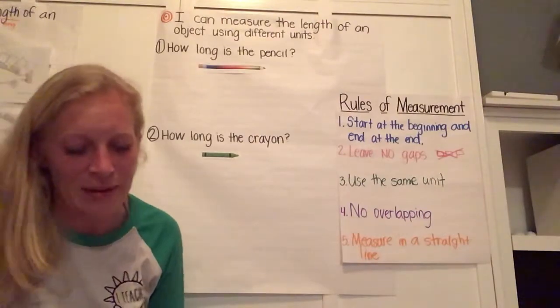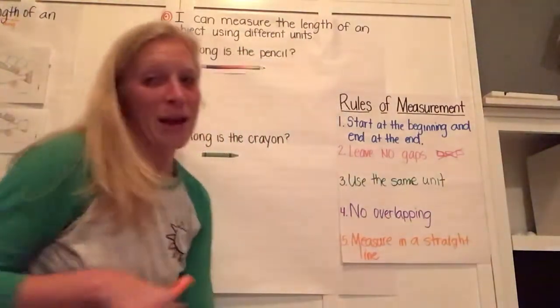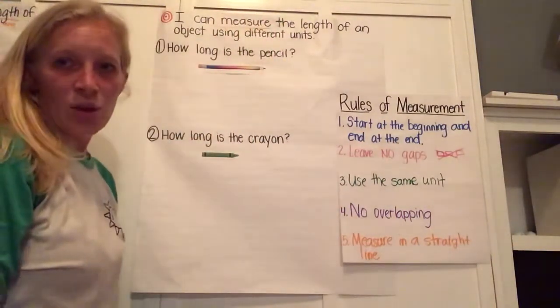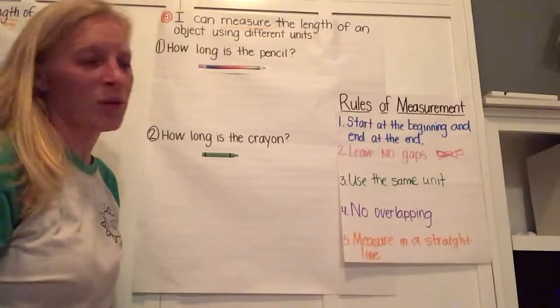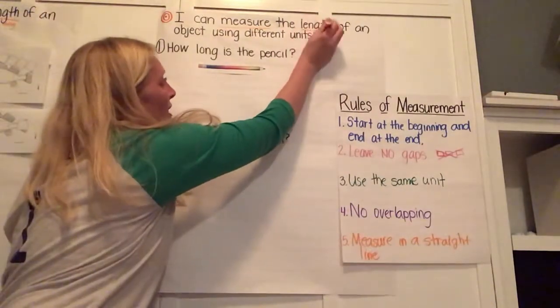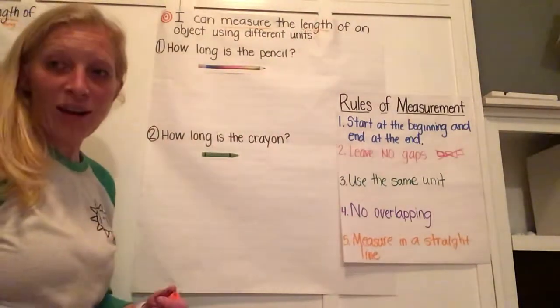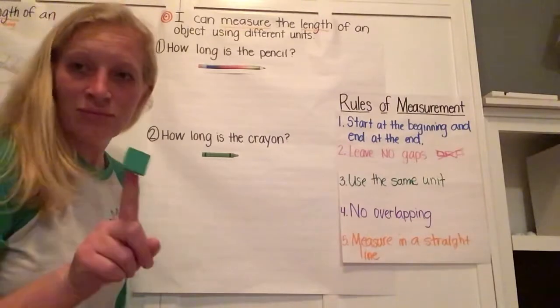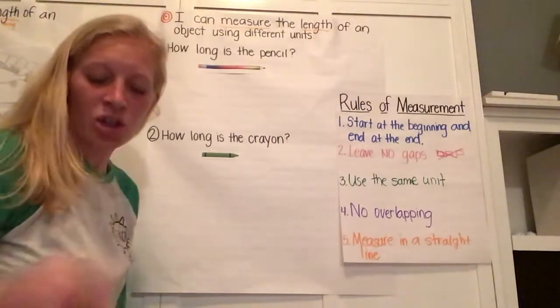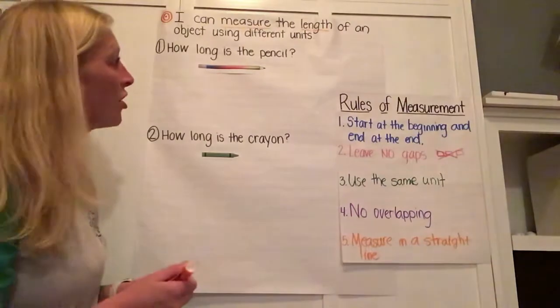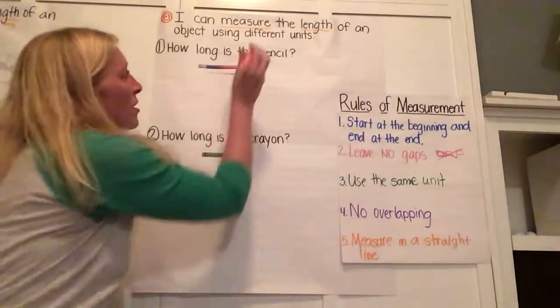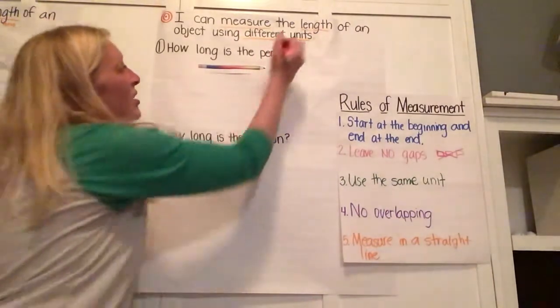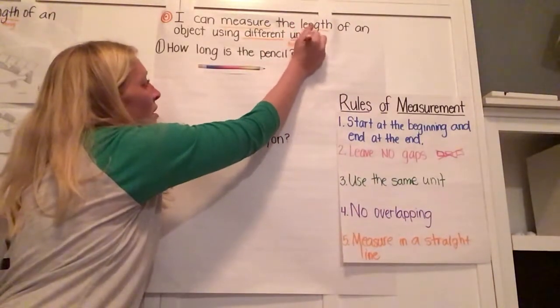I can measure the length of an object using different units. Yesterday we talked about some of these words. We talked about measurement and how measuring helps us find how big something is. In the work we're doing today, we're really thinking about the length of an object or how long that object is. Yesterday we used one unit. We used an inch tile. Today, our learning target tells us that we're going to be using different units. Remember, a unit is the tool we're using to measure.